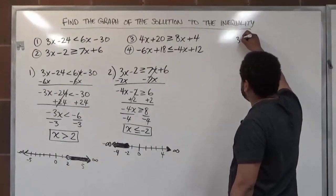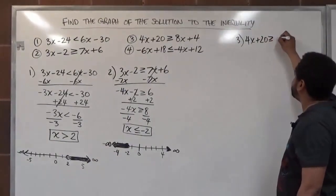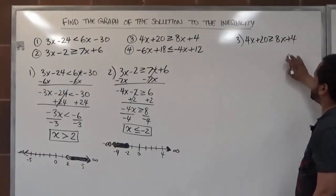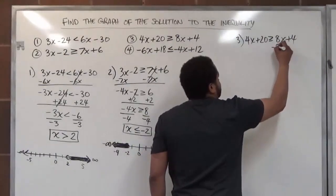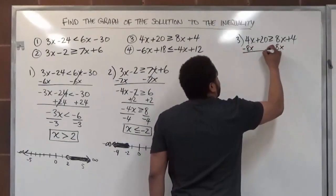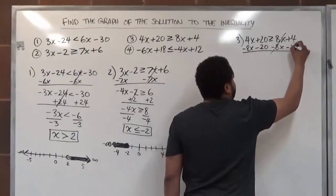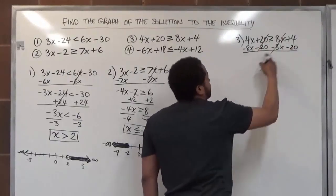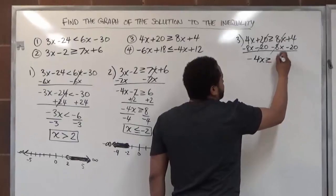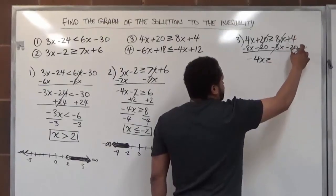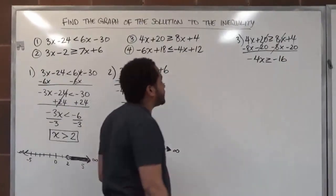Let's move on to number three: 4x plus 20 is greater than or equal to 8x plus 4. Again, we move the x's left and the numbers right. Let's do this in one shot — subtracting 8x from both sides while also subtracting 20 from both sides. The 20s go away, the 8x's go away, leaving 4x take away 8x, which is negative 4x, greater than or equal to 4 minus 20, which is negative 16. That's two steps done in one.